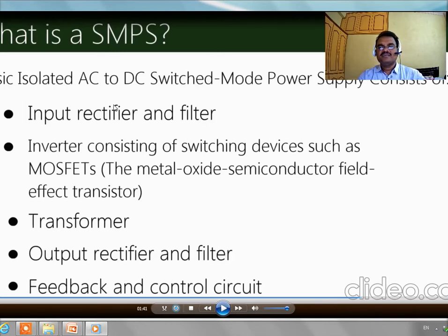All computer components — in fact all electronic components — use DC current. That's why we have to convert AC to DC, and it must be stable current.